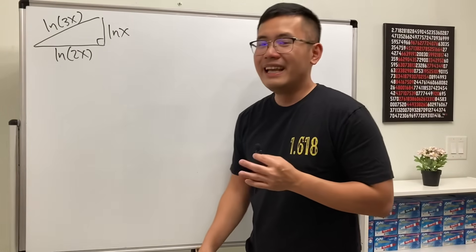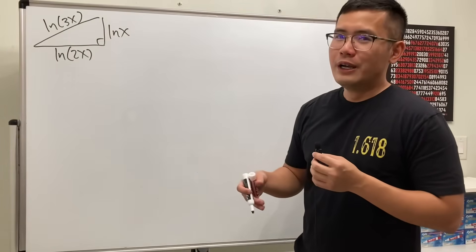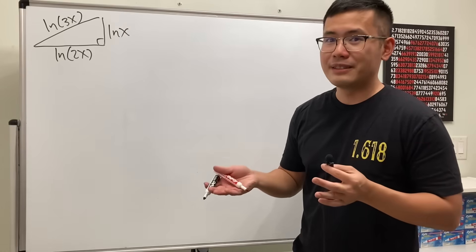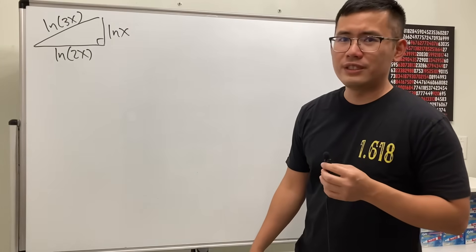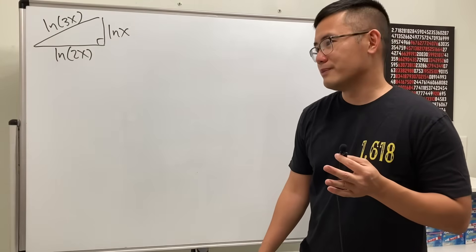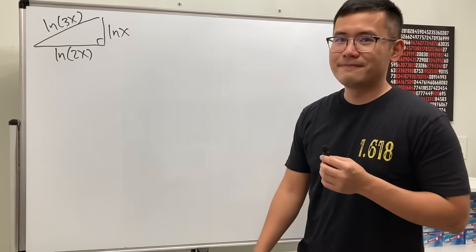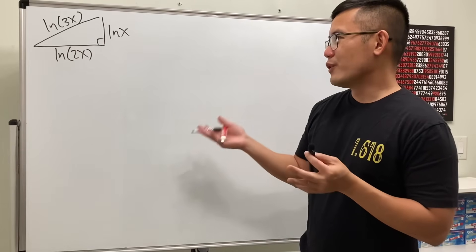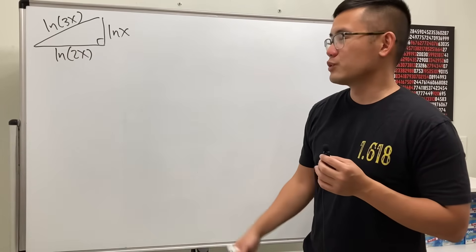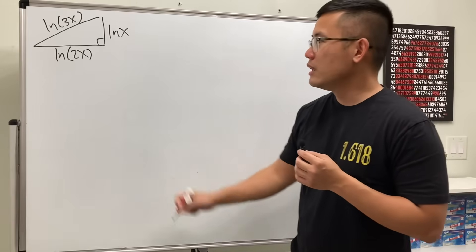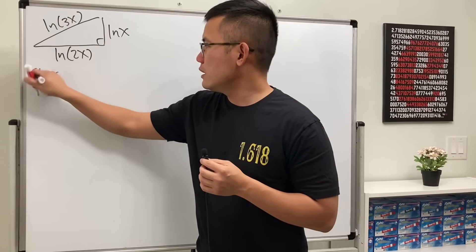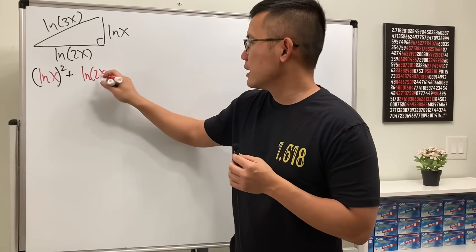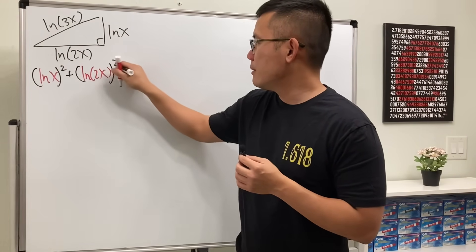When you have a right triangle and put down some log functions in a good pattern, you can come up with some really nice questions. As always, please pause the video and try this first. We'll start by using the Pythagorean theorem, since we're talking about the sides of a right triangle. So we square the first side, add the second side squared — that's ln(2x) squared — and set it equal to ln(3x) squared.